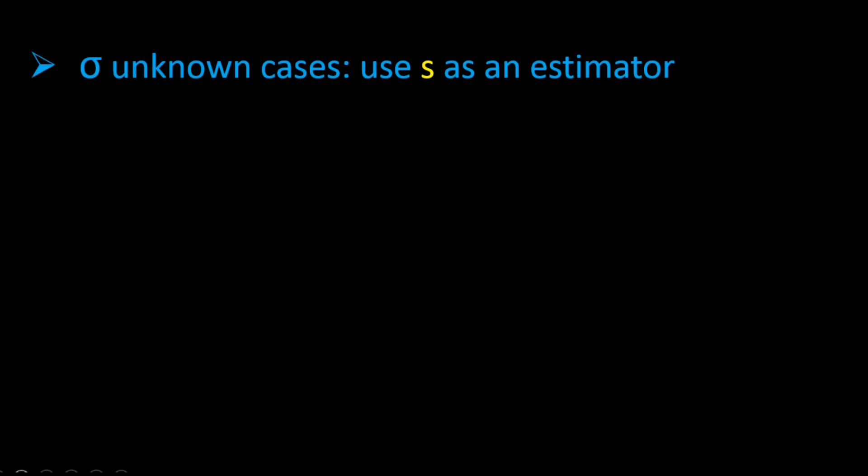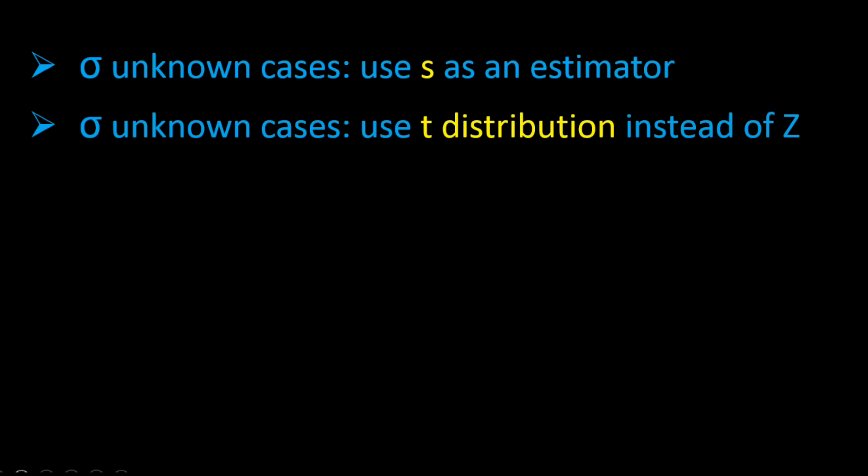So for sigma unknown cases, the topic of this tutorial, we use the sample standard deviation S to estimate sigma. We will also use a probability distribution called the t distribution instead of the Z distribution. This t distribution accounts for samples of a smaller size and when samples are used to estimate population standard deviations.